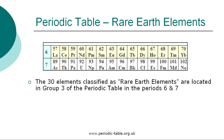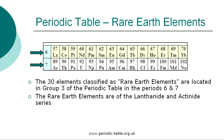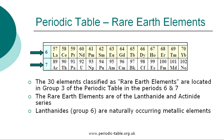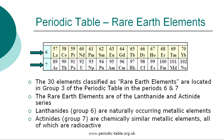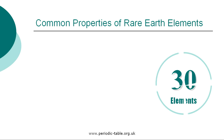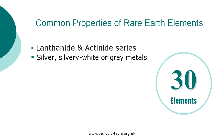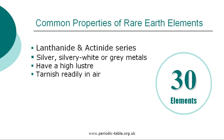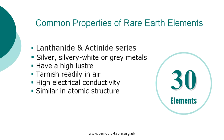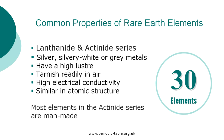The 30 elements classified as rare earth elements are located in group 3 of the periodic table and in the 6th and 7th periods. The rare earth elements are of the lanthanide and actinide series. The lanthanides, which are found in group 6, are naturally occurring metallic elements. The actinides, which are found in group 7, are chemically similar metallic elements and they are all radioactive. The rare earth metals are silver, silvery white, or gray metals which have a high luster but tarnish readily in air. They have high electrical conductivity and are similar in atomic structure. Most of the elements in the actinide series are synthetic — that is, man-made.